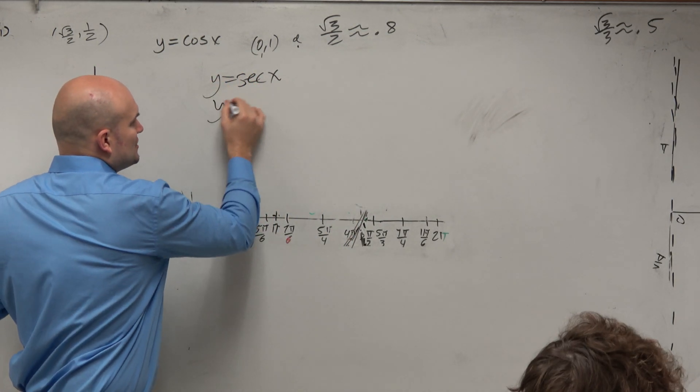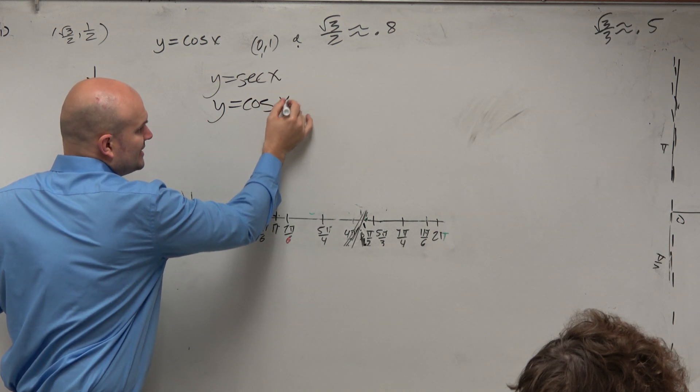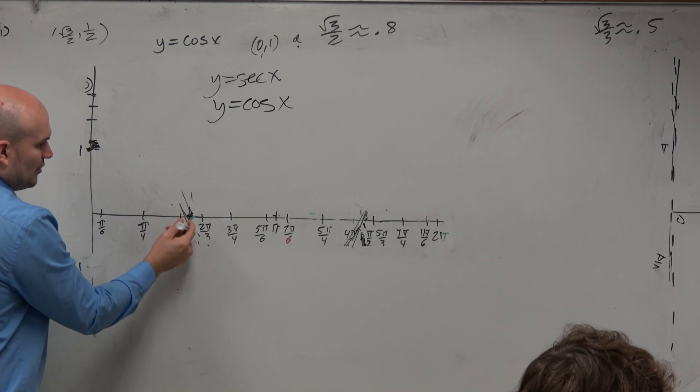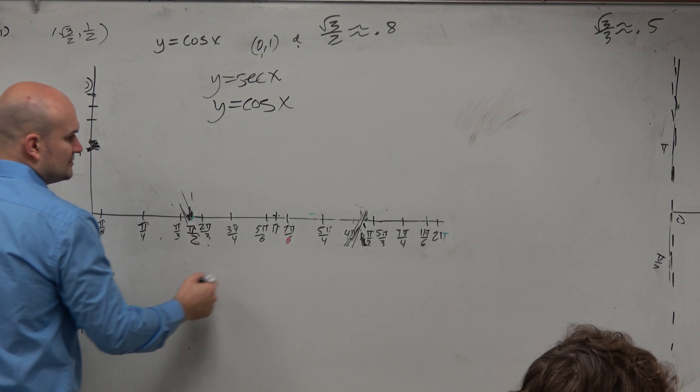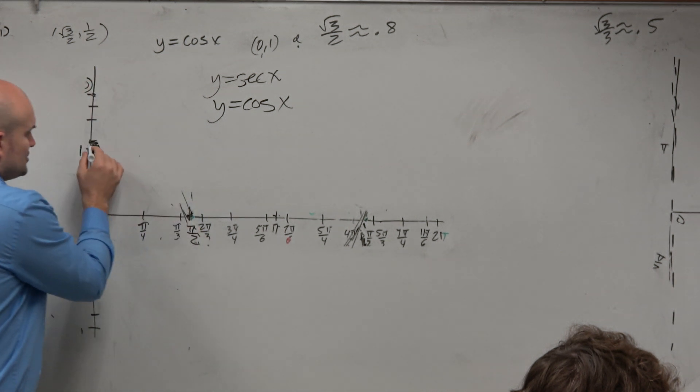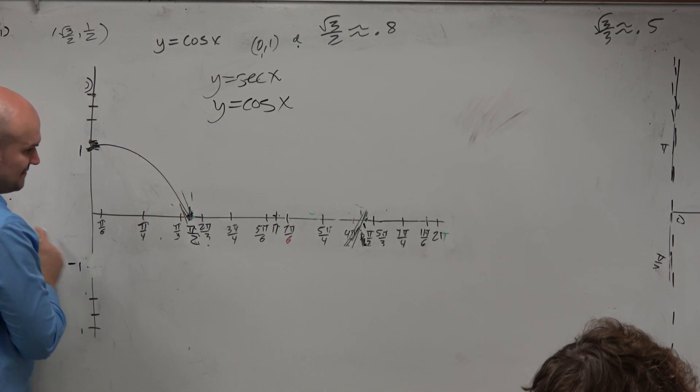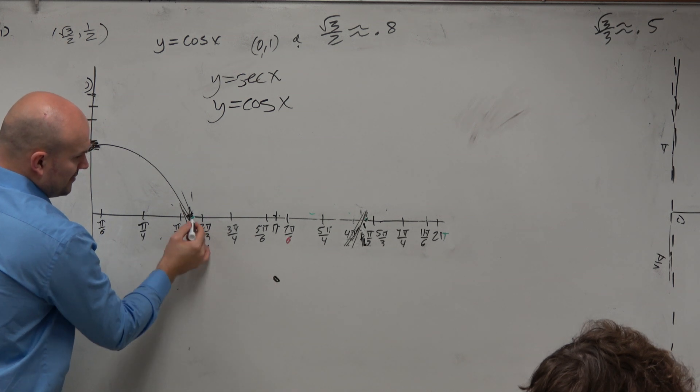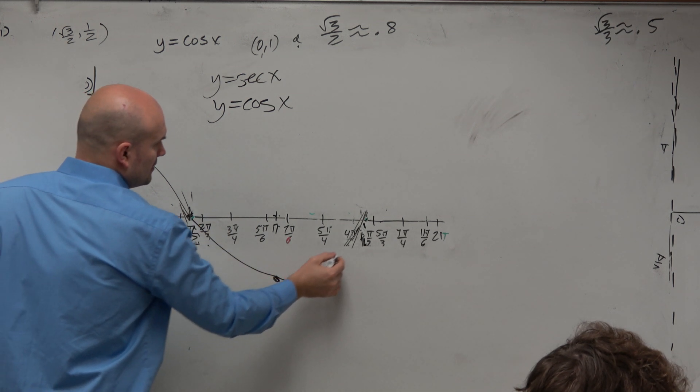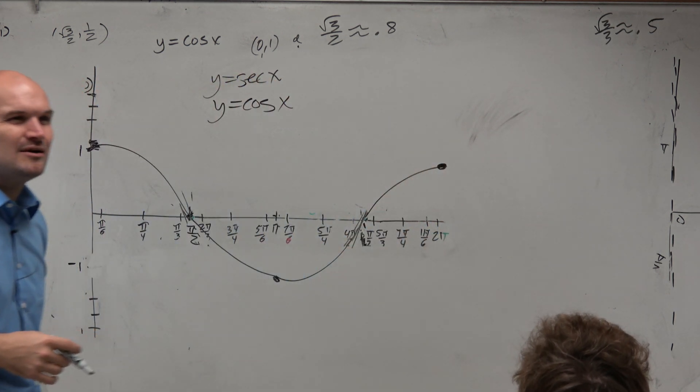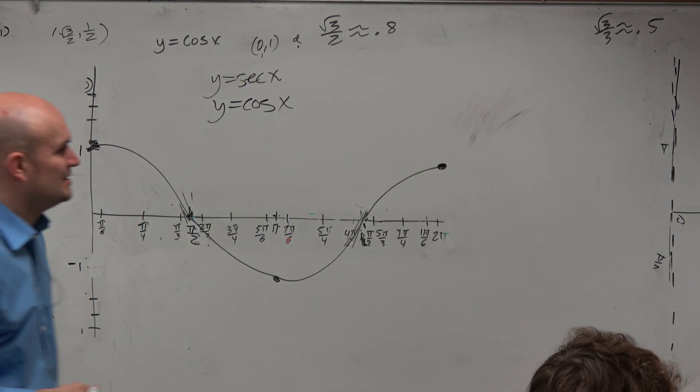So let's go and sketch cosine, because that's what we did last class period. And if you were halfway paying attention last class period, then hopefully you remember that we had some important points on the cosine function. We started at 1, had an intercept at pi halves, had a minimum value at pi, pi halves, and 2. And you might say, yeah, I kind of remember that graph in my notes, but I can't really remember how we got those points again.